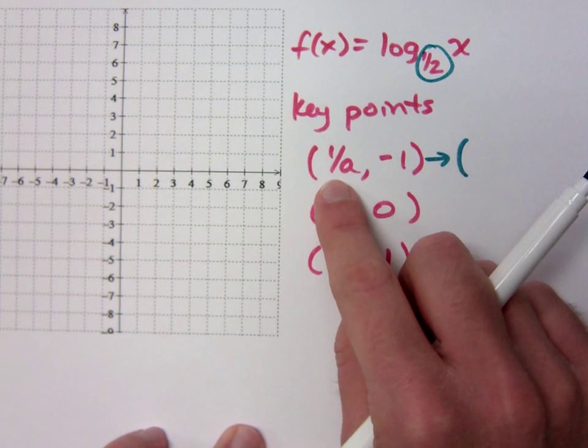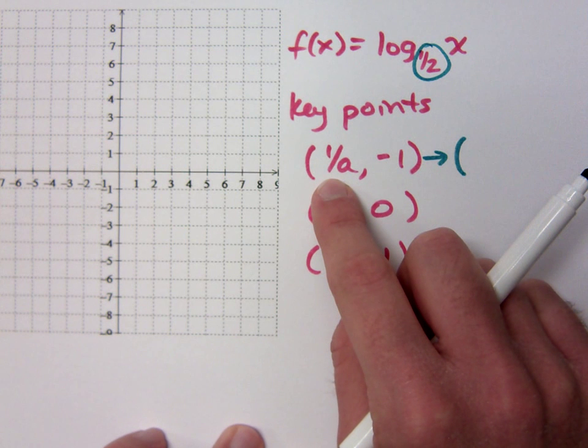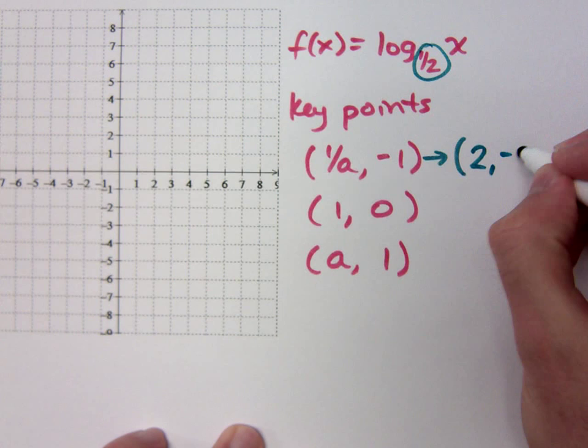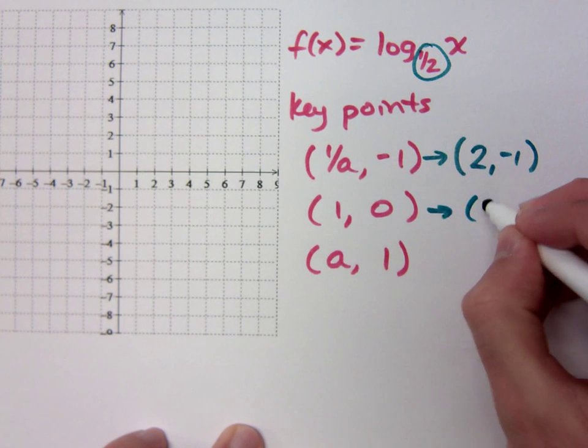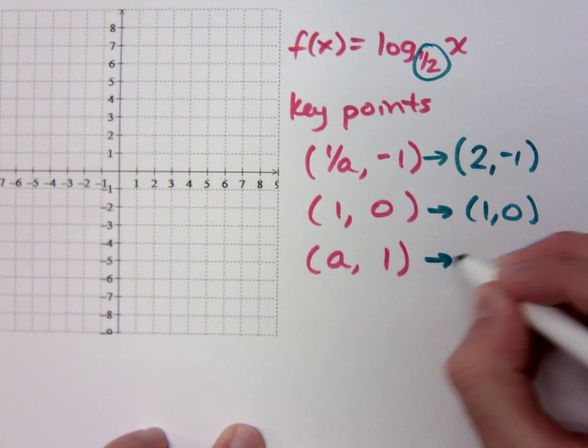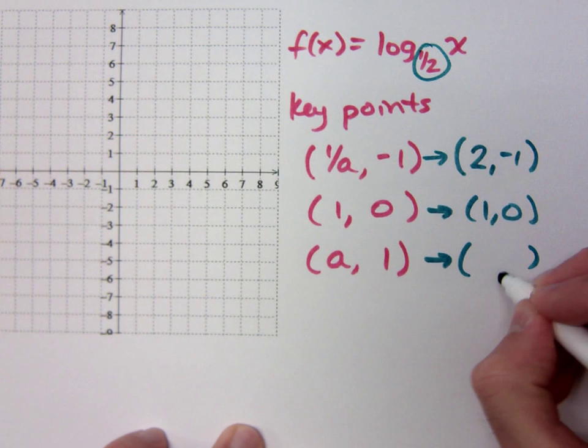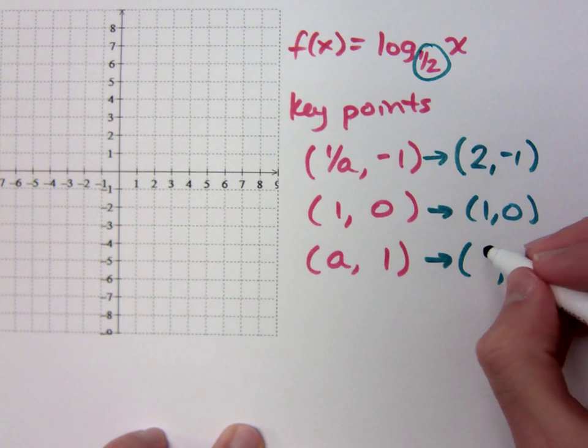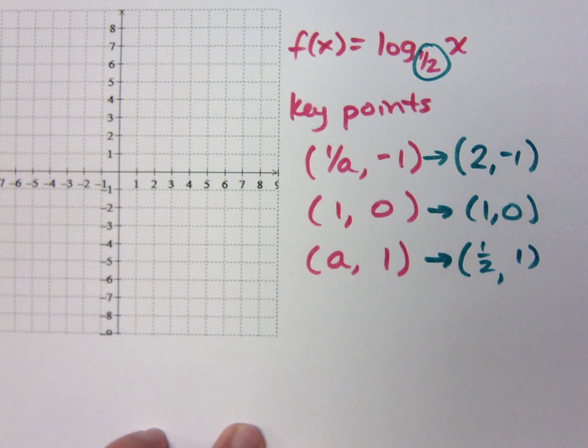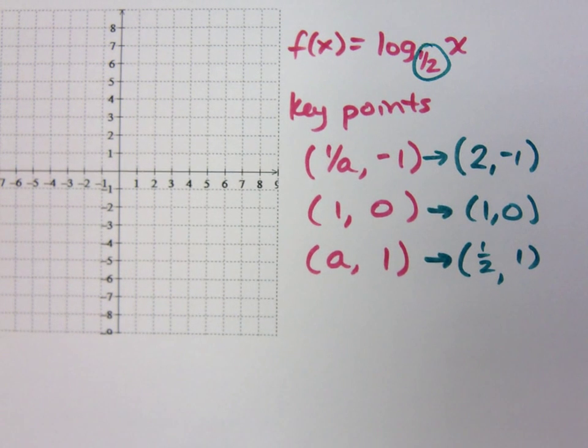Remember, this indicates reciprocal. So 2, negative 1; 1, 0 is just going to be 1, 0; and a, 1 is going to be what? Yeah, one-half, 1, because your a is your base, which is one-half.